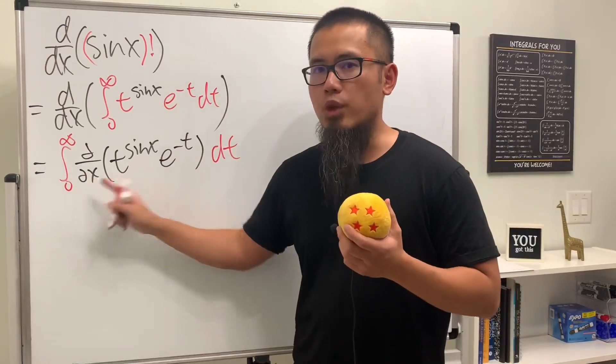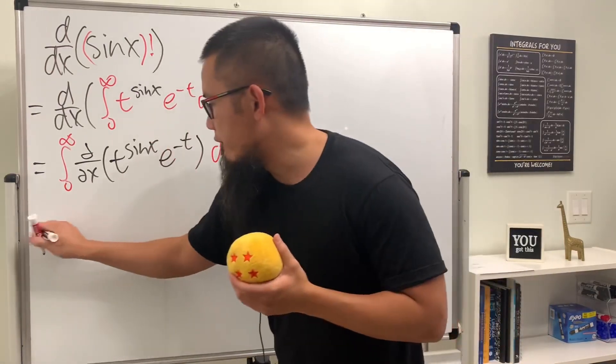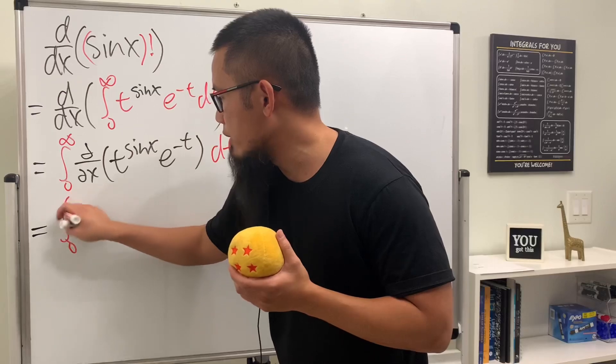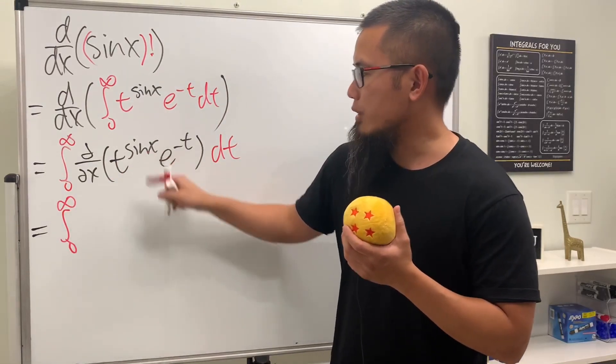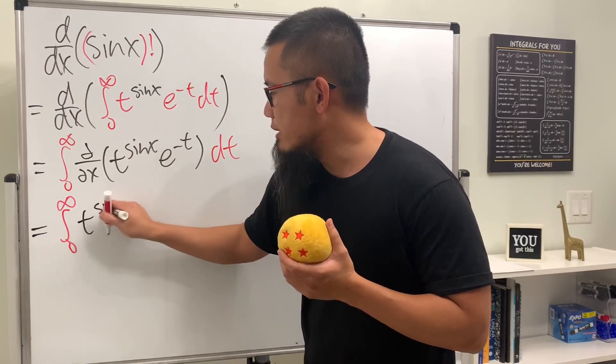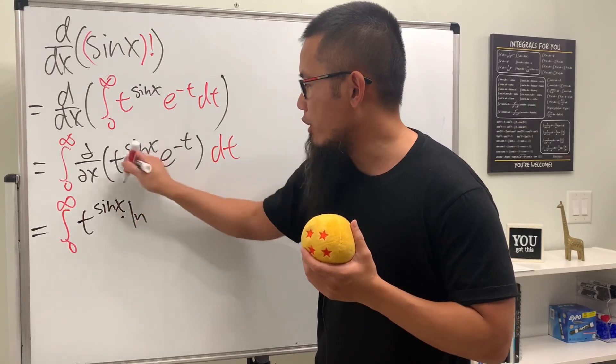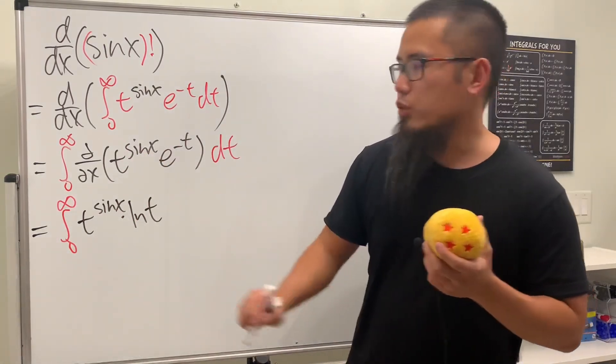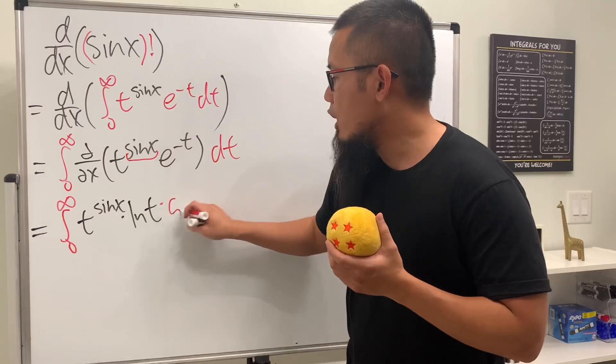And remember in the x world, t is just a constant. So let's go ahead and put this down. We have the integral going from 0 to infinity. The derivative of t to that power is t to the sin x power multiplied by ln of t, and then don't forget the chain rule - multiply by the derivative, which is going to be cosine x.